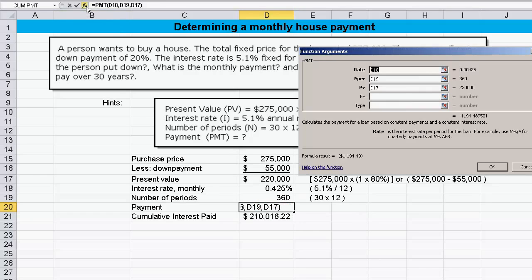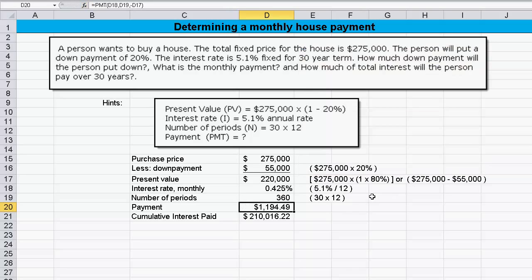Of course, I want to see the payment as a positive number. So I either can put a negative in front of the formula or switch the present value. So I'll make that a negative. And then it gives me a positive payment number.